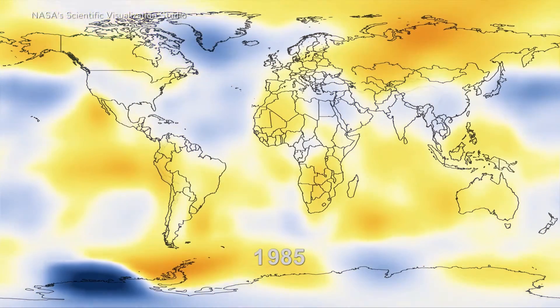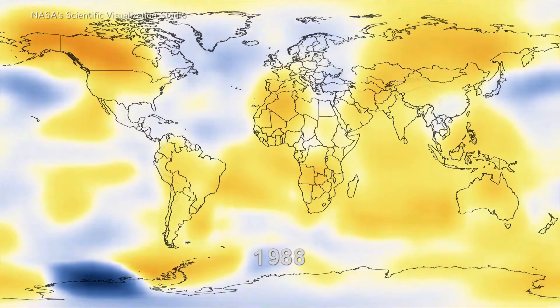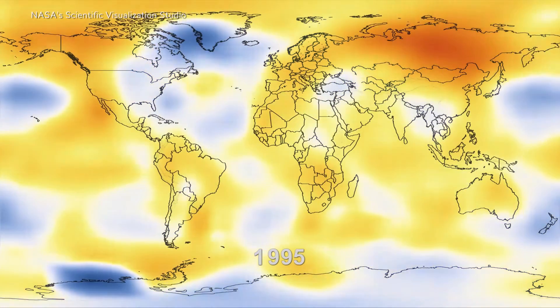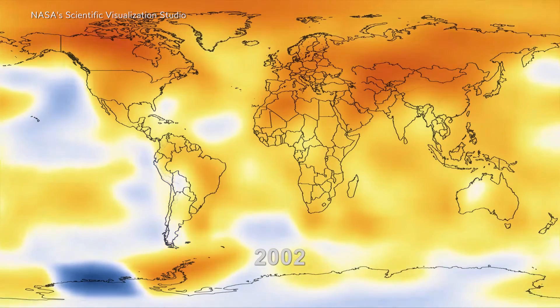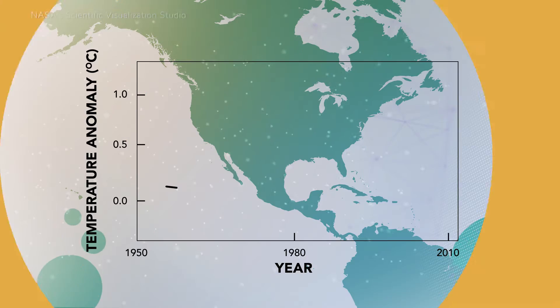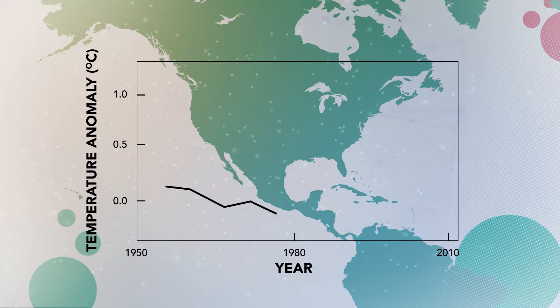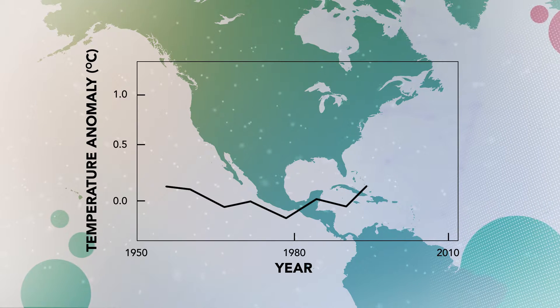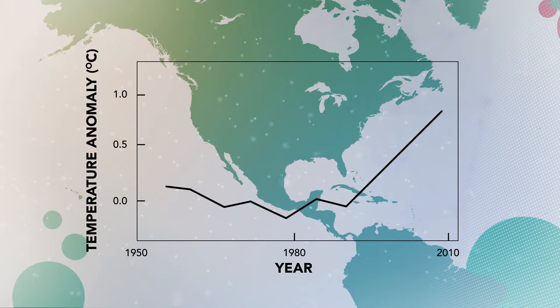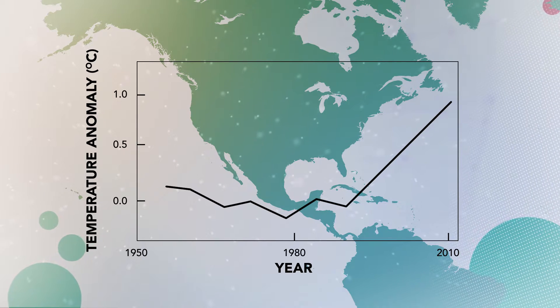With that understanding, let's look at some output from a group of global climate models. Normally we see this output as a map of a variable, like average temperature, for a specific time period, like 1980 to 2009. Or we might see a time series graph of how a variable changes over a long period of time, like from 1950 to 2010. In both cases, the boundary conditions of the historical period are taken from measurements of how these big picture drivers have changed in the past.